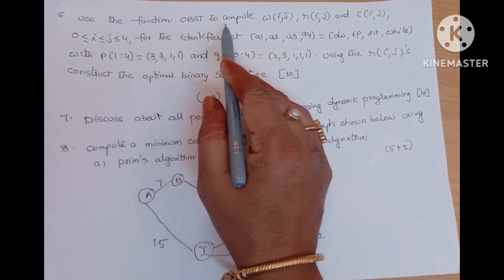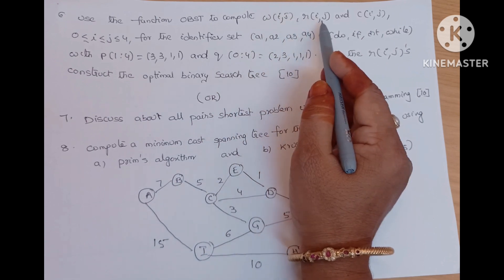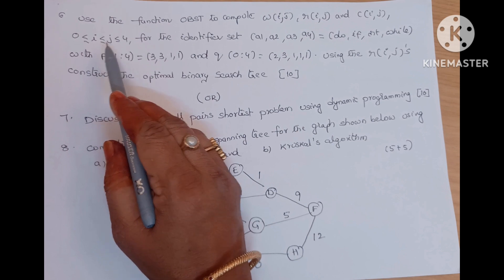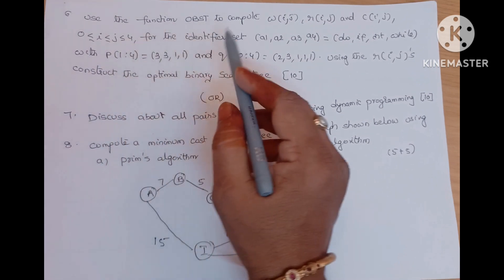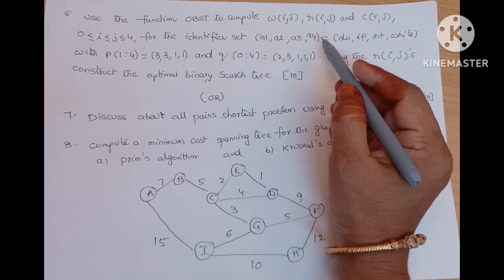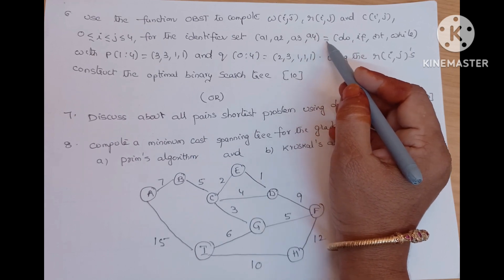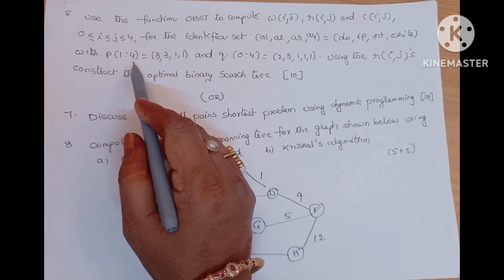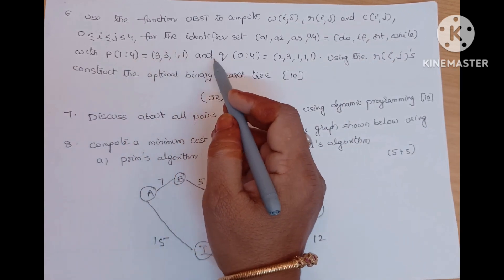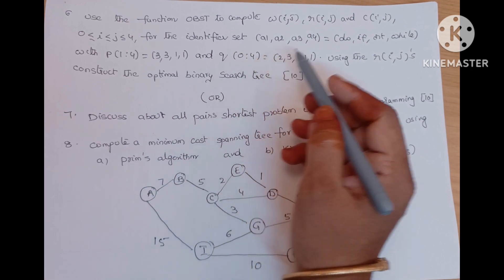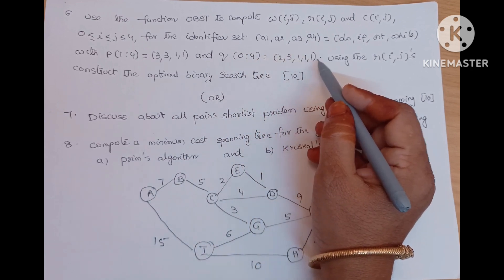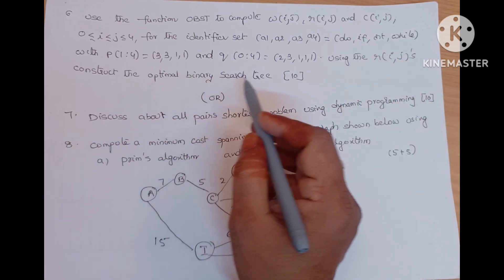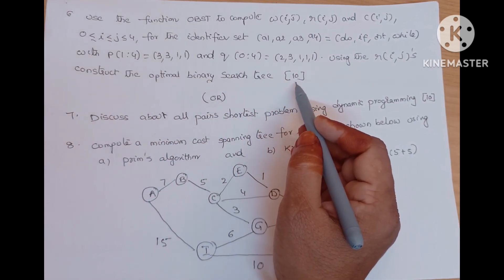Use the function OBST to compute W of ij, R of ij, C of ij, 0 less than or equal to i less than or equal to j less than or equal to 4. For the identifier set a1, a2, a3, a4. Those values are do, if, int, while with P of 1 to 4 equal to 3311 and Q of 0 to 4 equal to 23111. Using the R of ij's construct the optimal binary search tree. Direct question 10 marks.